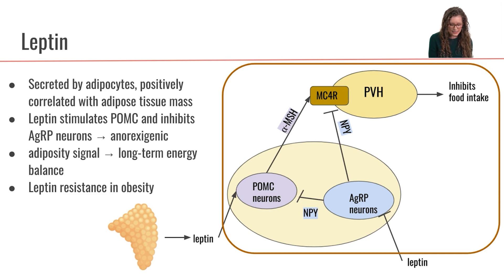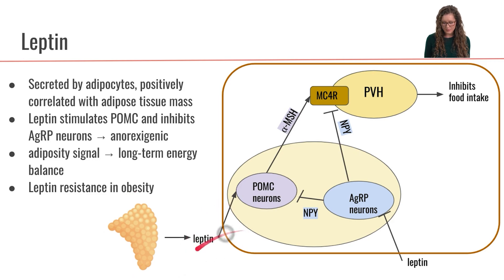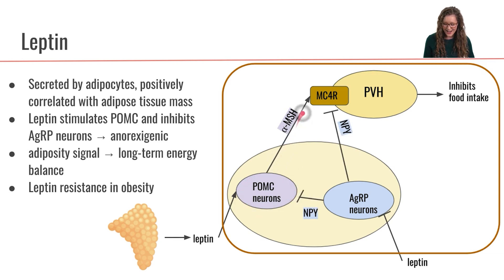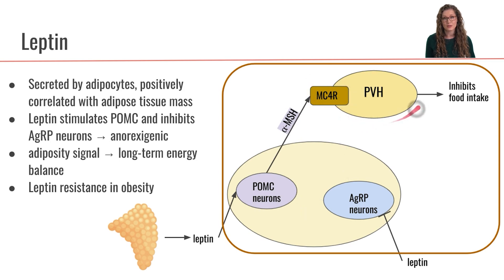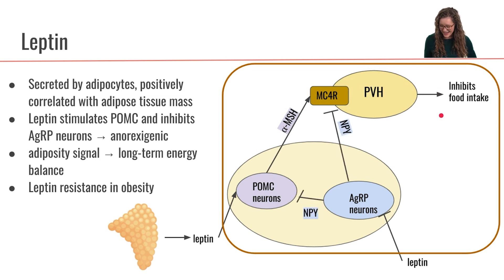Leptin, which is secreted by our adipose tissue, acts at the level of the arcuate nucleus. Leptin can cross the blood-brain barrier and stimulate the POMC neurons. Those POMC neurons will release the neurotransmitter alpha-MSH to activate the MC4R receptor within the paraventricular hypothalamus, which then goes on to inhibit food intake.